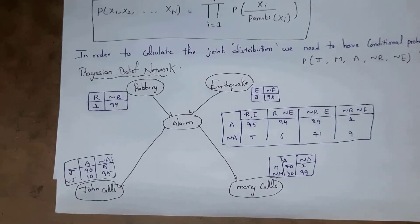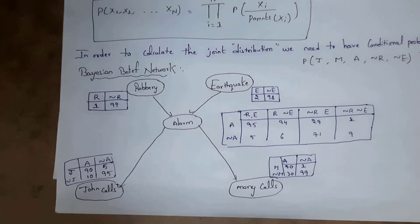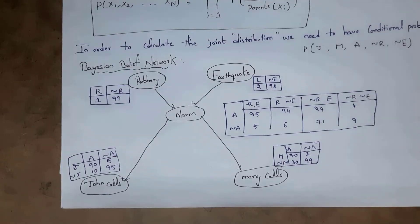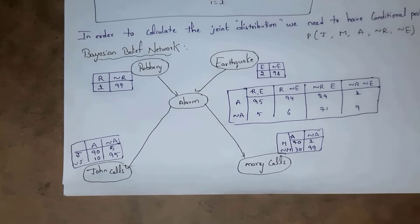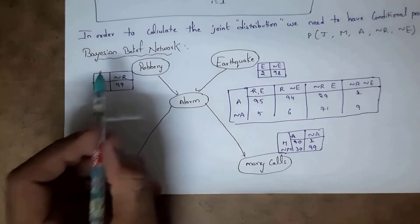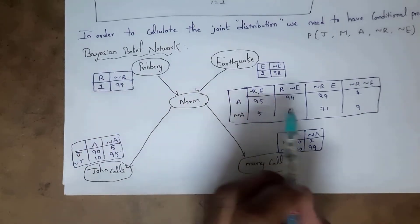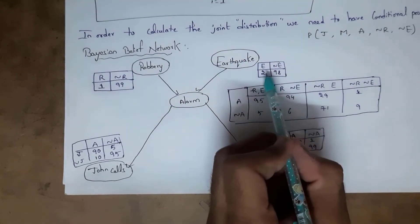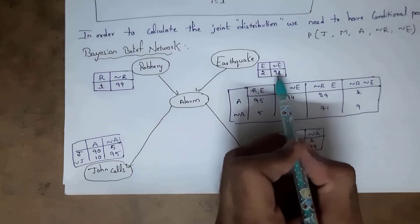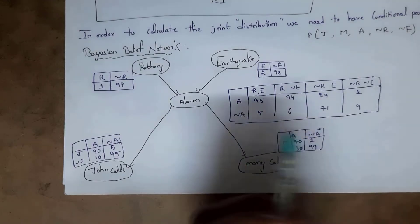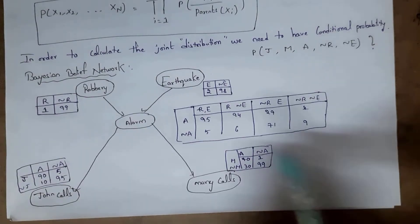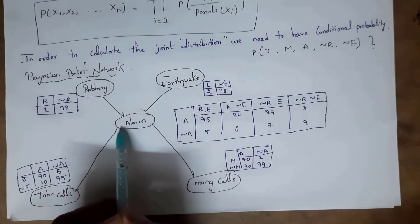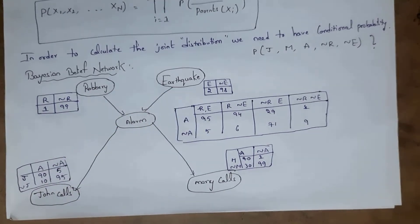The Conditional Probability Table provides information about how likely each event will occur or not occur. For robbery, there is a 1% chance it will occur and 99% chance it will not. For earthquake, there is a 2% chance it will occur and 98% it will not. For the alarm variable, its parent variables are robbery and earthquake, giving four combinations.